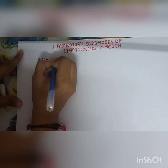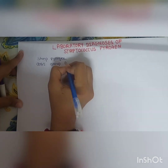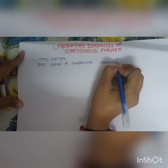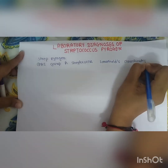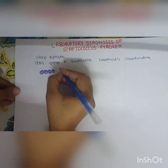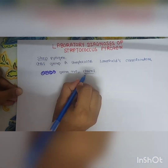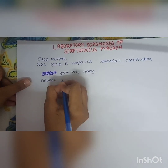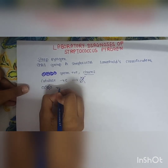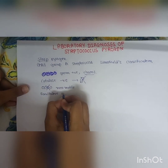In today's video we will talk about the laboratory diagnosis of Streptococcus pyogenes, also known as Group A Streptococcus (GAS) according to the Lancefield classification. S. pyogenes are gram-positive cocci arranged in chains — 'strep' means chains. They are catalase negative, so they won't produce catalase enzyme. They are non-motile and facultatively anaerobic, meaning they can survive in the presence or absence of oxygen.